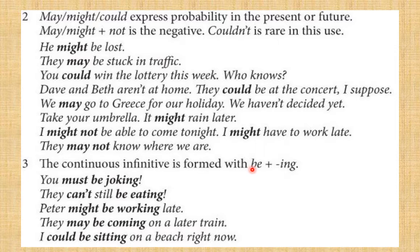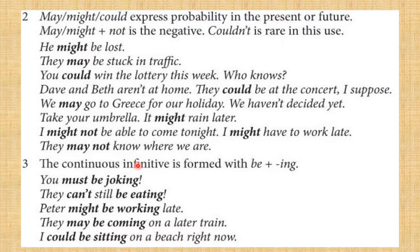The continuous infinitive is formed with 'be' plus the -ing form. Examples: 'You must be joking.' 'They can still be eating.' 'Peter might be working late.' 'They may be coming on a later train.' 'I could be sitting on the beach right now.' All students, please know the form: continuous infinitive with 'being.'